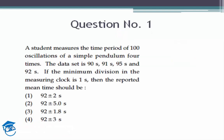We start with question 1. A student measures the time period of 100 oscillations 4 times and the data set is 90 seconds, 91 seconds, 95 seconds and 92 seconds.